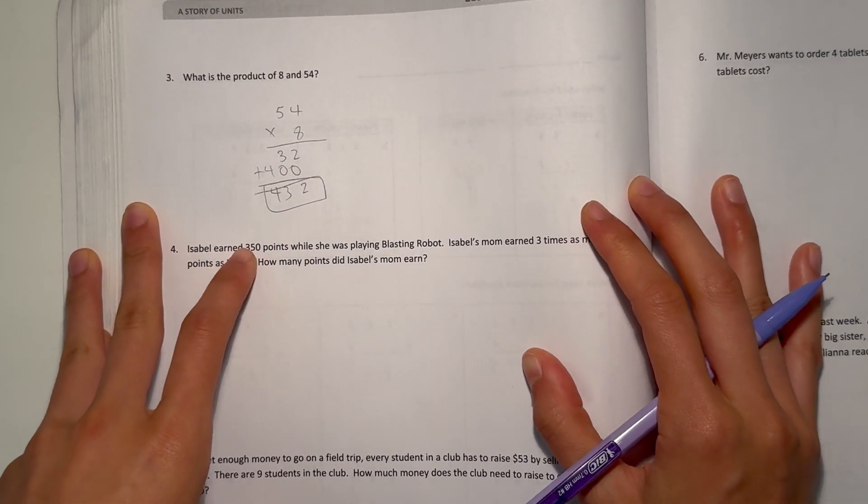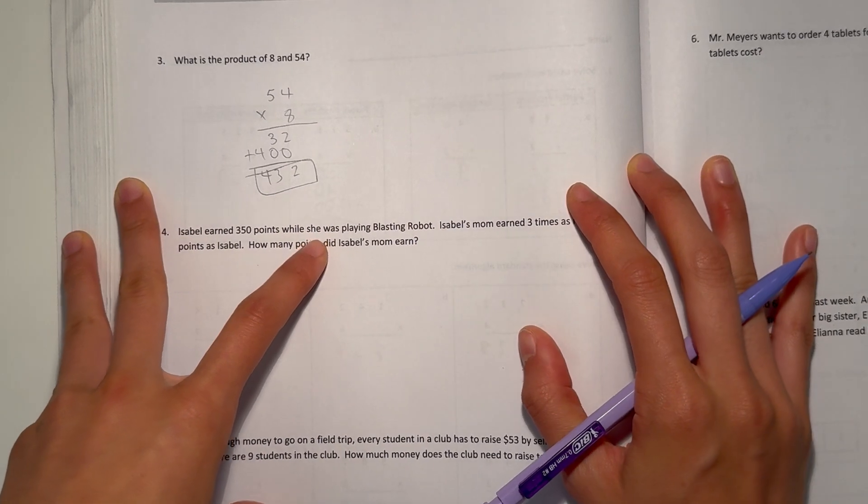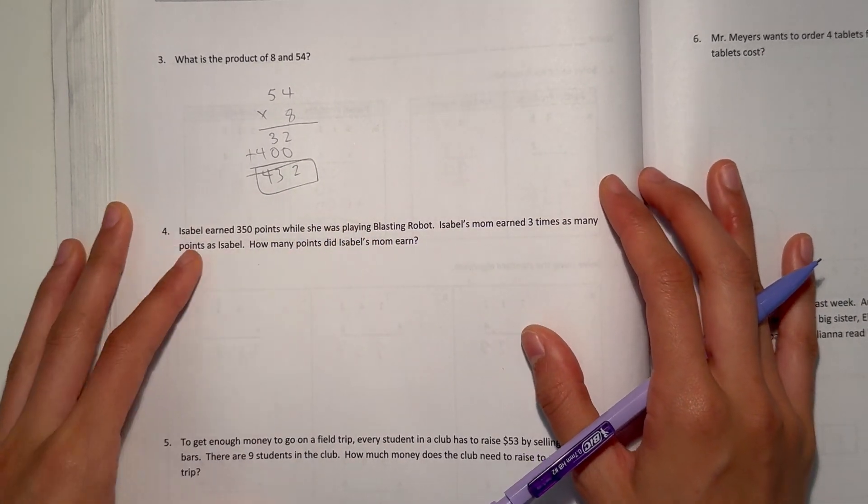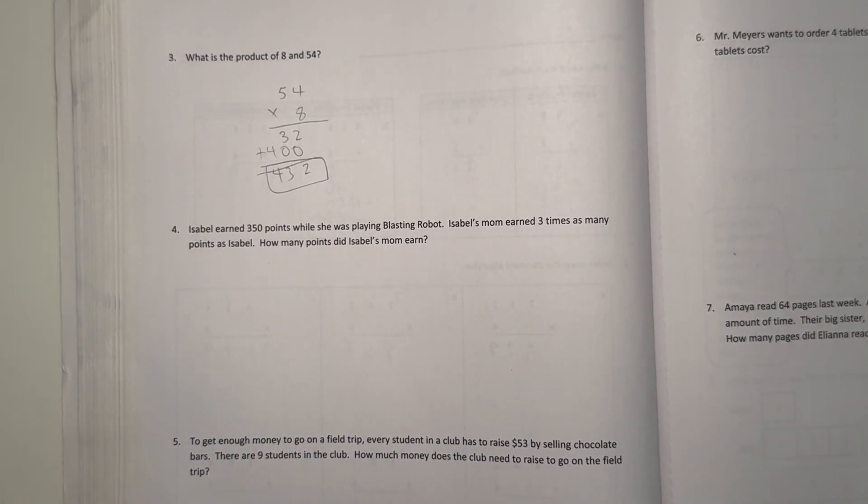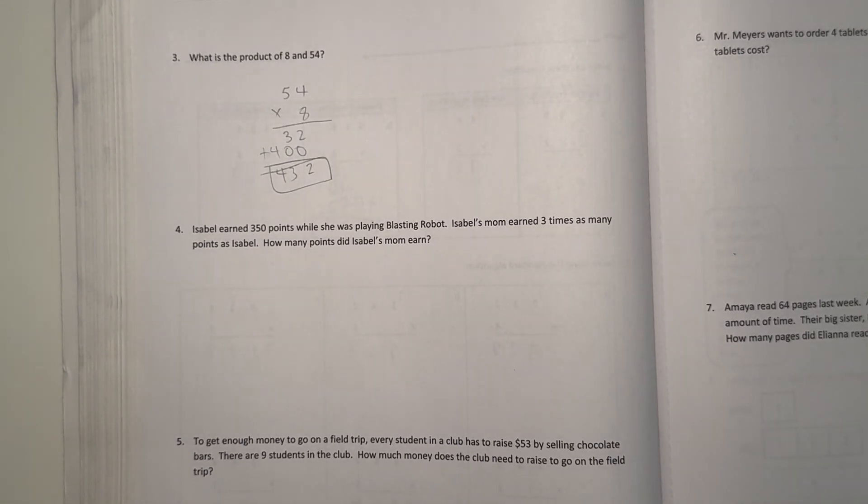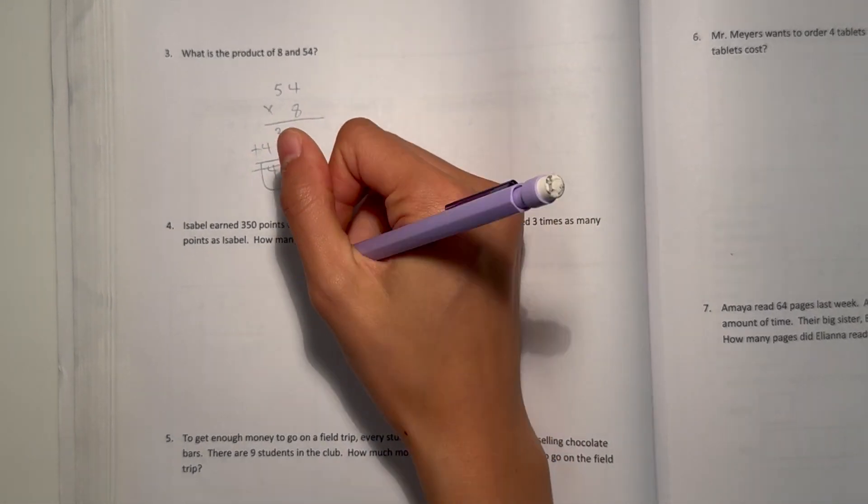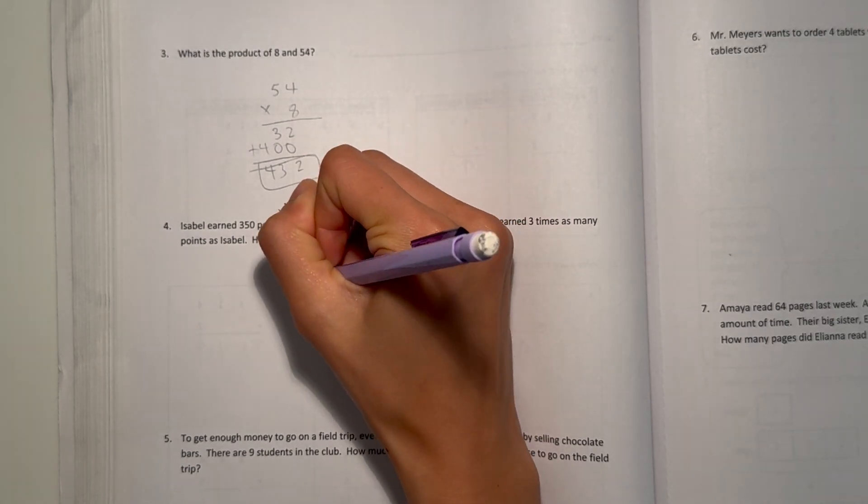Number 4, Isabelle earned 350 points while she was playing Blasting Row Ball. Isabelle's mom earned 3 times as many points as Isabelle. How many points did Isabelle's mom earn? 3 times as many, 350 times 3.